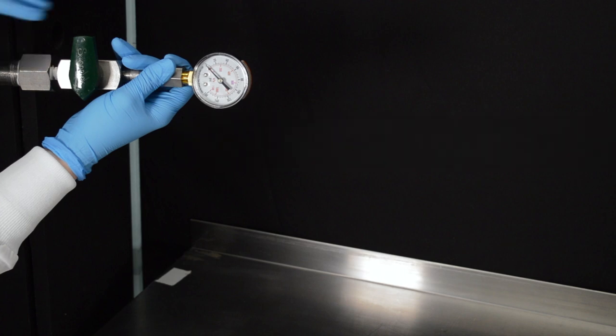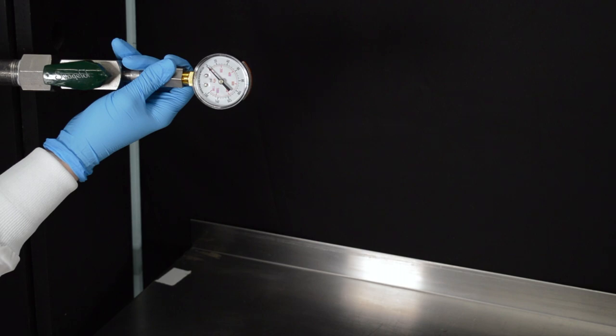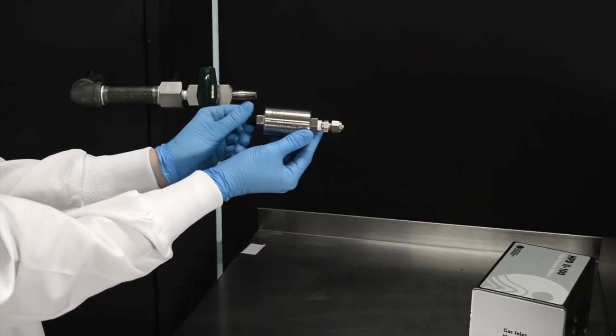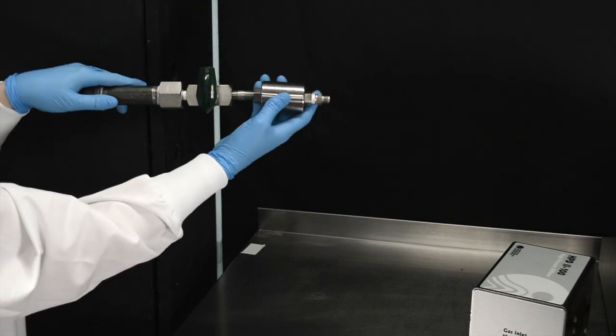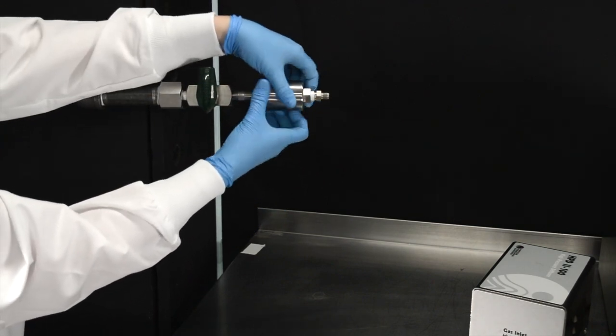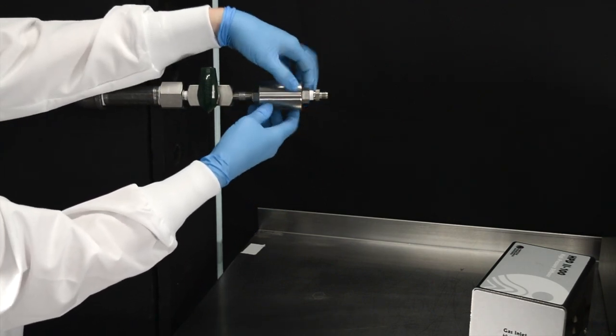Once this is set, close the sampling port and remove the pressure gauge. You'll need to remove the black and silver caps from one of your stainless steel background filters. Next, attach the provided filter to the quick connect on your sampling point.